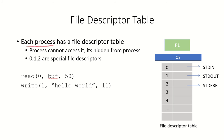While the OS maintains a global file table, each process has its own file descriptor table, which is particular to that process only. The process cannot access this file descriptor table directly because it is hidden from the process — any access must go through the operating system. In this table, each number refers to a file descriptor.